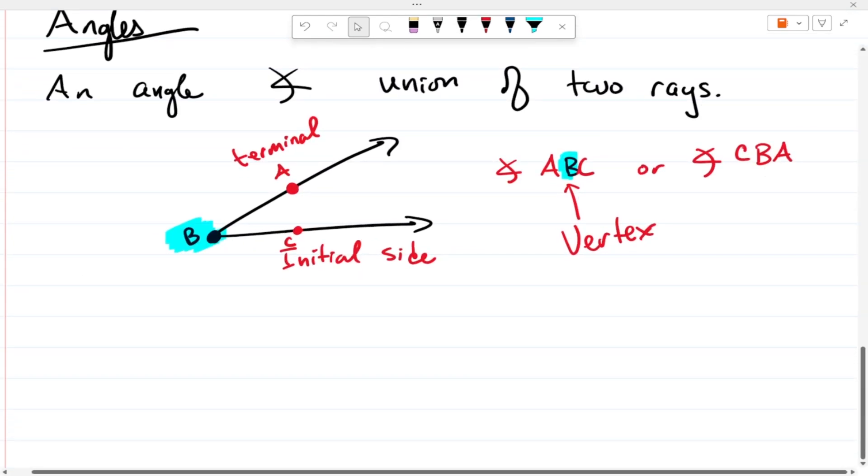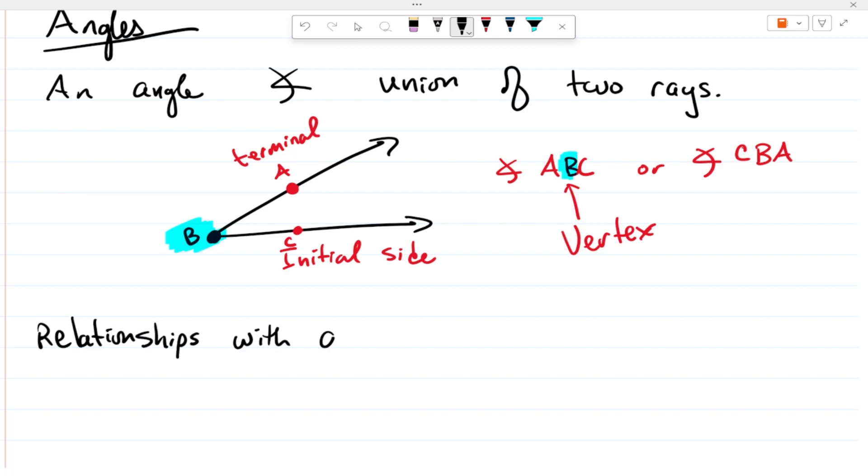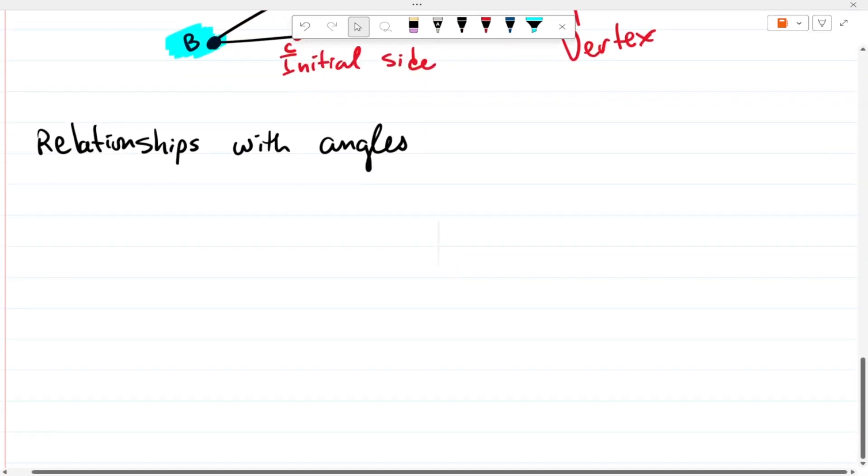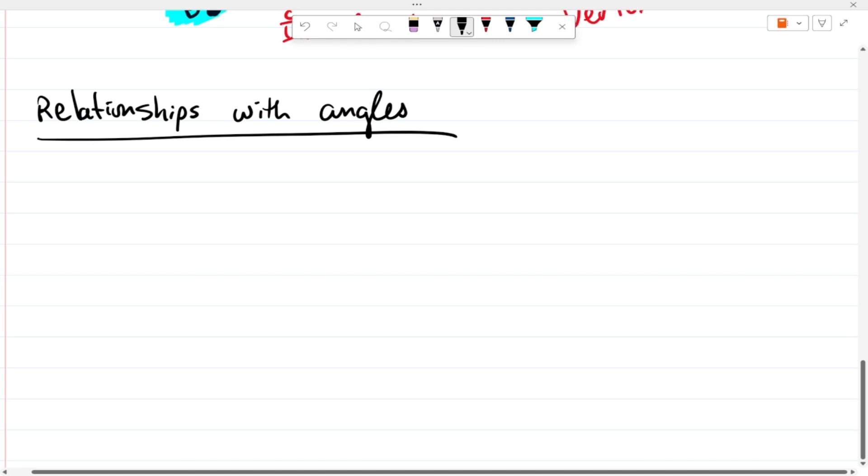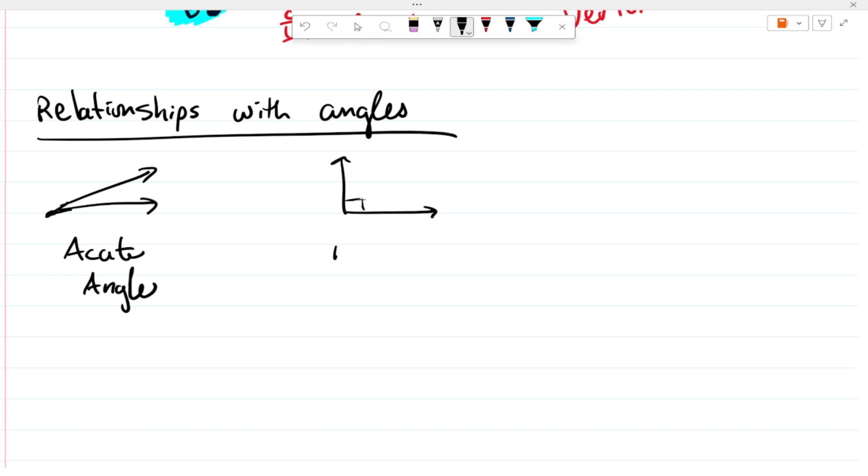So the next thing is relationships with angles. So we have many different angles that we speak about. The first one is going to be something that looks like this. And we call this an acute angle. The second one looks like this. And this is called a right angle. Now, the reason why we call the first one acute and the second one is right, is a right angle forms a 90 degree angle. But an acute angle, the angle measurement will be less than 90 degrees. So it's smaller. Acute angle is very small.